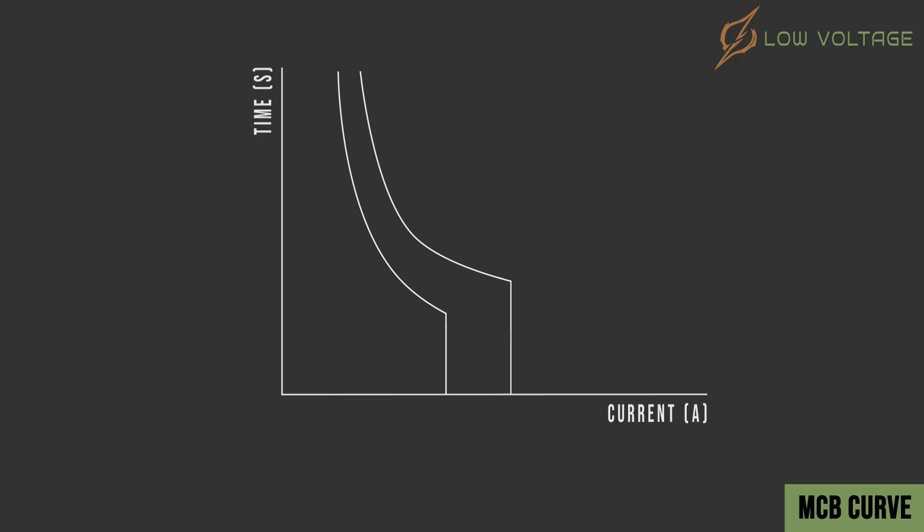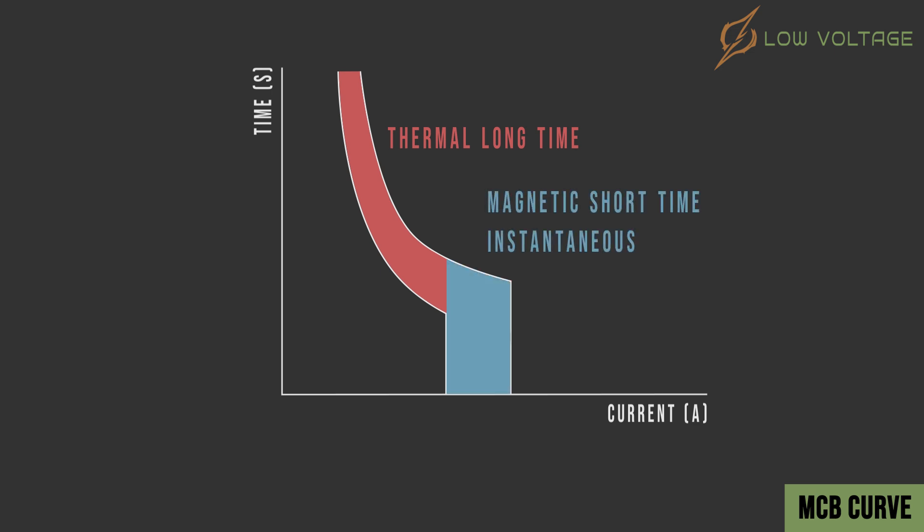The MCB Curve has two zones. The first zone is for long-time thermal protection, and the second zone is for short-time instantaneous electromagnetic protection. Miniature circuit breakers have rated current IN that defines long-time thermal trip setting. They also have magnetic trip range, which is minimum and maximum magnetic currents. This range defines short-time instantaneous magnetic settings.